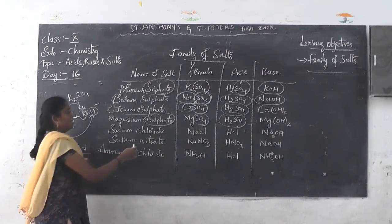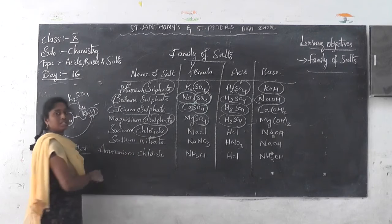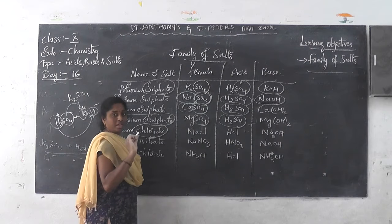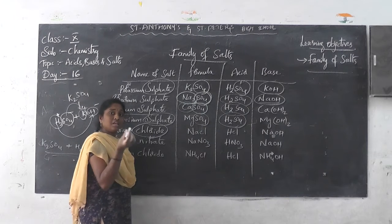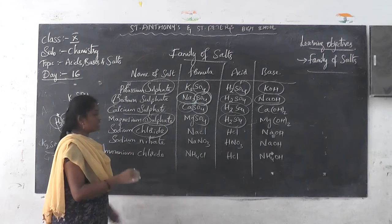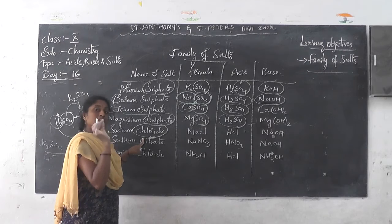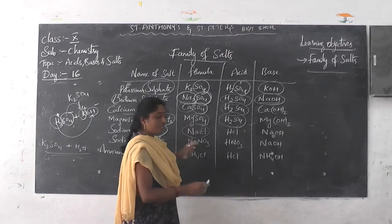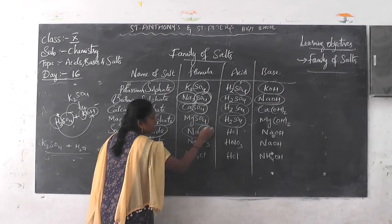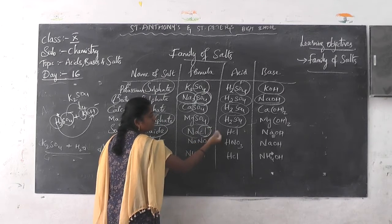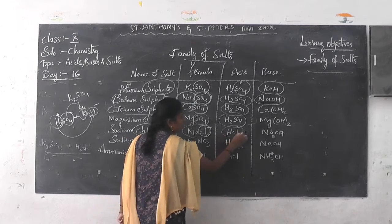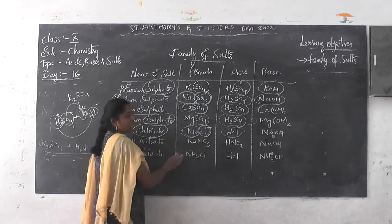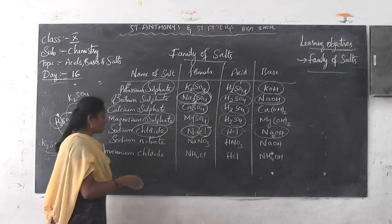Now let us see sodium chloride — it comes under the chloride family. The acid is hydrochloric acid. When hydrochloric acid reacts with a substance, you will get the chloride, so it comes under the chloride family. The formula is NaCl. Cl is present — Cl minus indicates HCl, so the acid is hydrochloric acid. And the base — Na — it comes under sodium hydroxide.